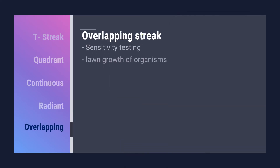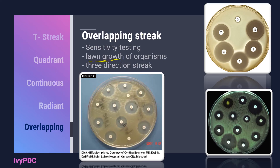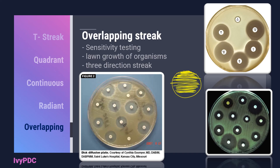Lastly, we have the overlapping streak used for sensitivity testing. This type of streaking pattern can produce a long growth of organisms, which is needed to test for the susceptibility pattern of organisms against certain antimicrobials. Most references indicate that to produce a long growth of organisms, three different streaking patterns must be performed in different directions. The first streak goes from the very top of the plate all the way down, making sure there are no spaces in between. The second streaking pattern is then done in a different direction, from top all the way to the bottom.